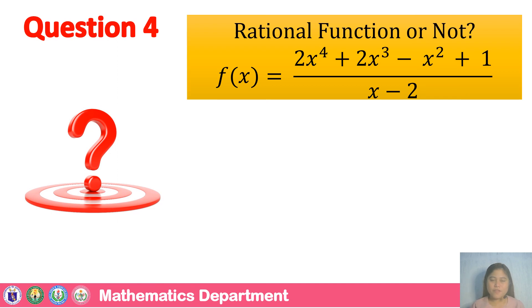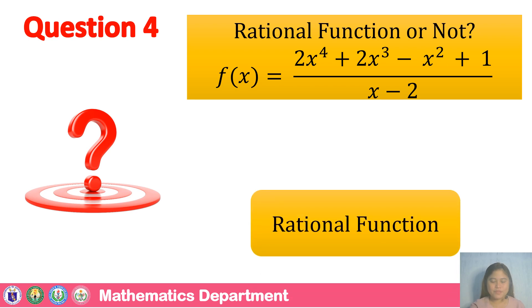Question number 4: F of x is equal to 2x raised to 4 plus 2x raised to 3 minus x squared plus 1, all over x minus 2. Is it a rational function or not? That is a rational function because both numerator and denominator are polynomials.